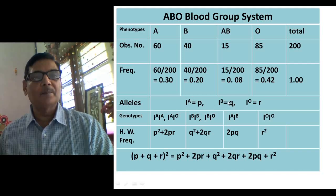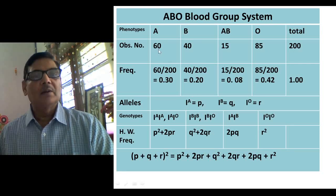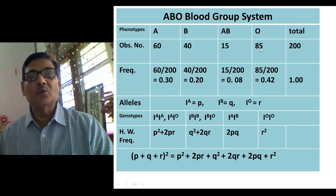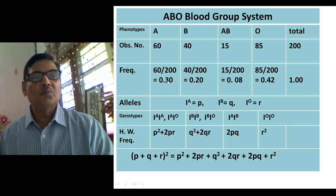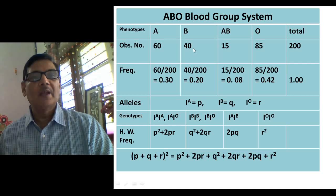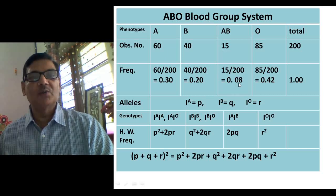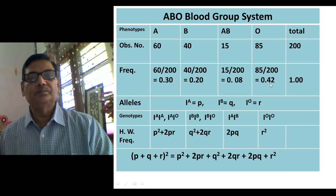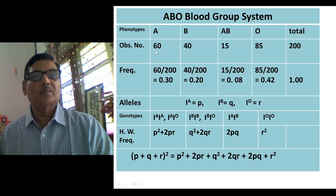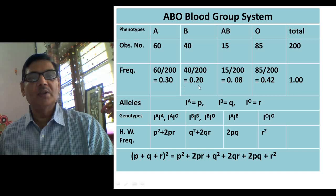First, we find the frequency of the four blood groups in the population. 60 out of 200 gives a frequency of 0.30 for blood group A. Then 40 divided by 200 gives 0.20 for B. Then 15 divided by 200 gives 0.08 for AB. And 85 out of 200 gives 0.42 for O. When you add up these four values, the total comes to 1.